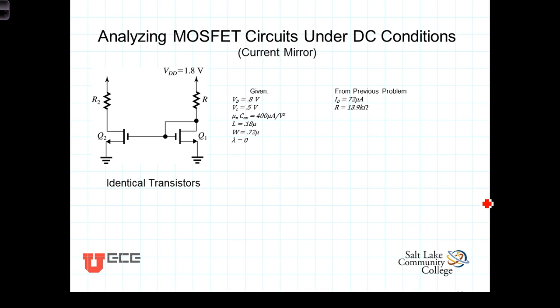But we're asked to determine the value of R2 that will bias this transistor Q2 right at the border between the triode and the saturation regions. In other words, right at the point where VDS on the second transistor is equal to VGS minus VT.